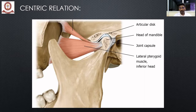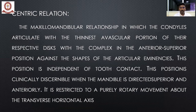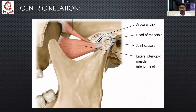Centric relation has nothing to do with the teeth — it mainly depends on your TMJ. The formal definition, which you have to memorize, is: the maxilla-mandible relationship in which the condyle articulates with the thinnest avascular portion of the respective disc. This position is clinically discernible and is restricted to purely rotational movement in the transverse hinge axis. Essentially, centric relation is the relationship between the condyle and the glenoid fossa when the condyle contacts the thinnest or mid portion of the articular disc.